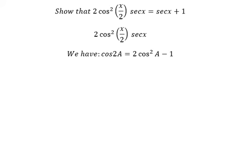So I will put negative 1 to the left and we have cosine 2A plus 1 equal to 2 cosine squared A.